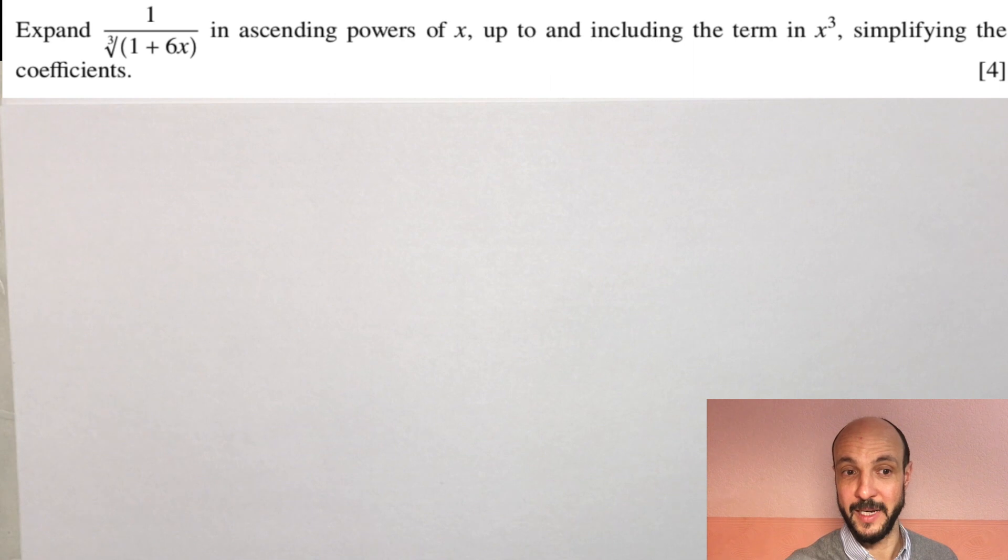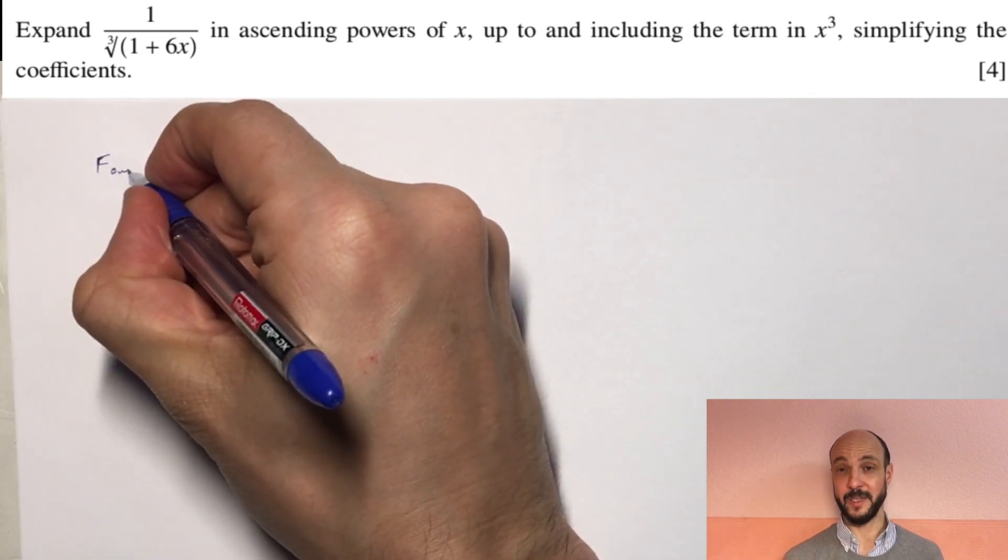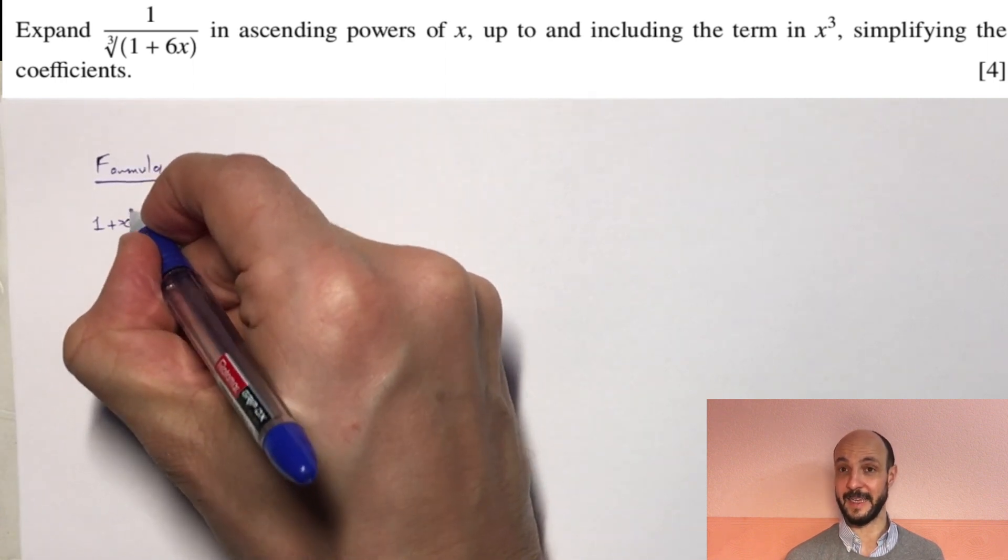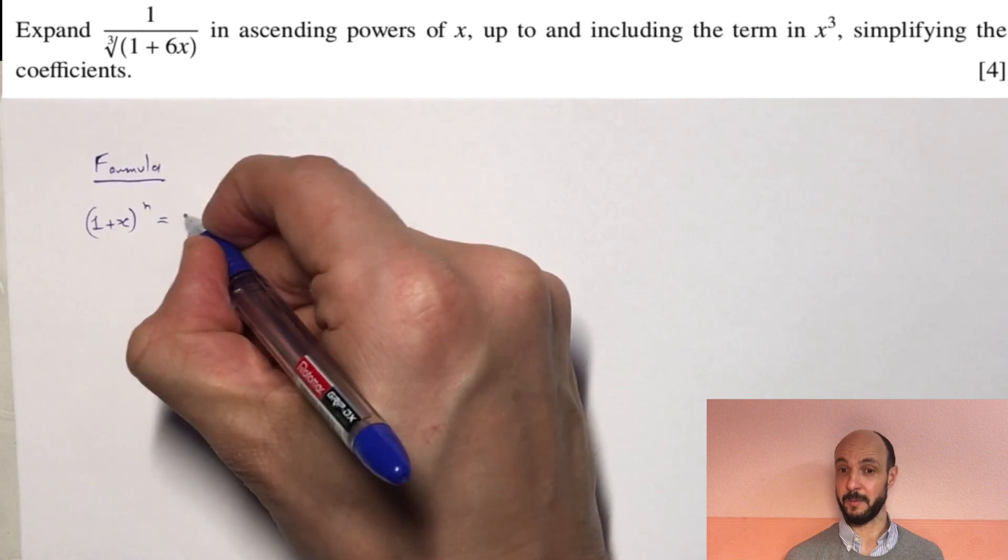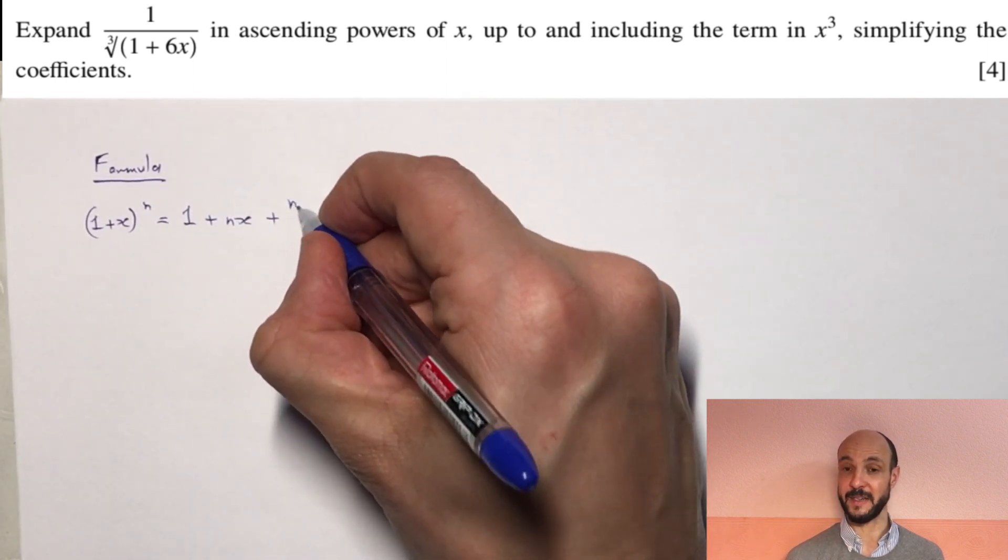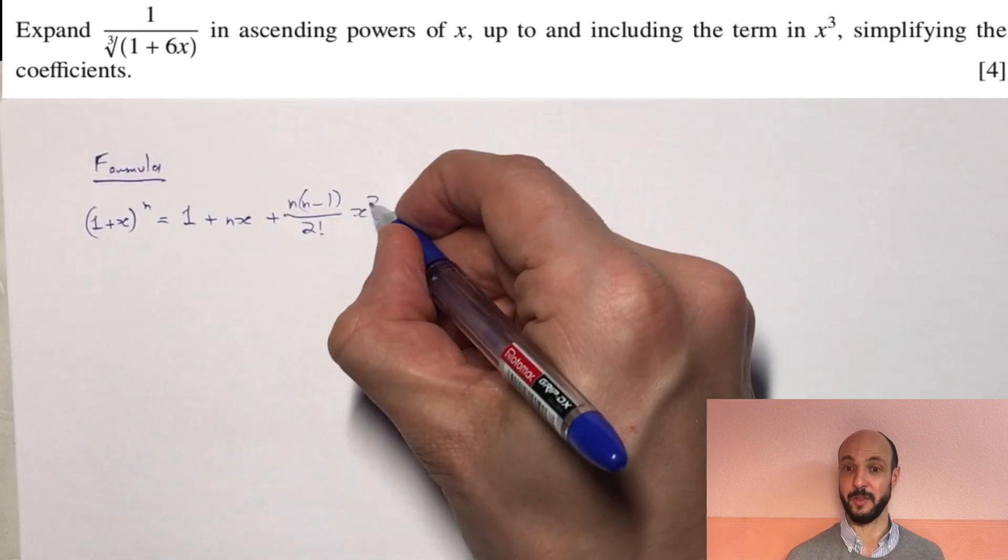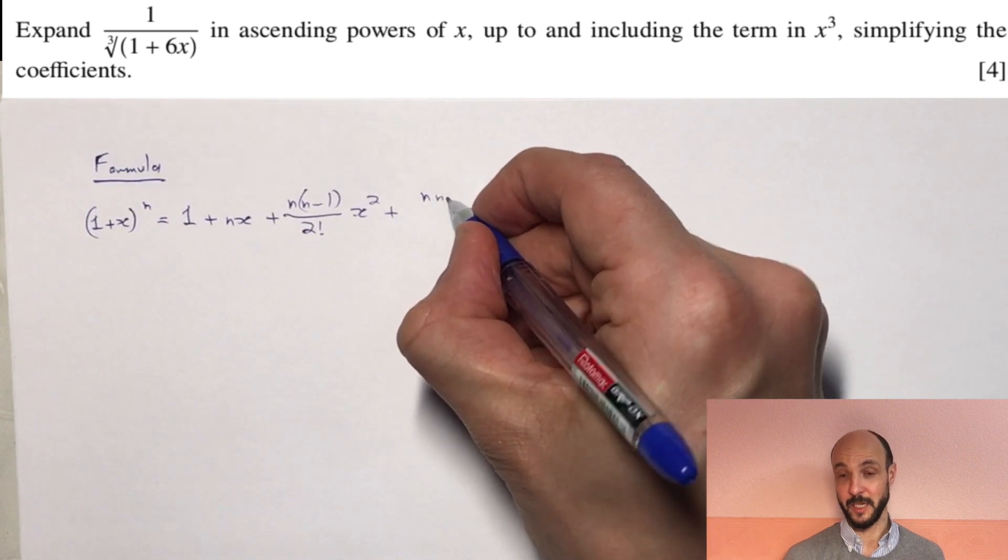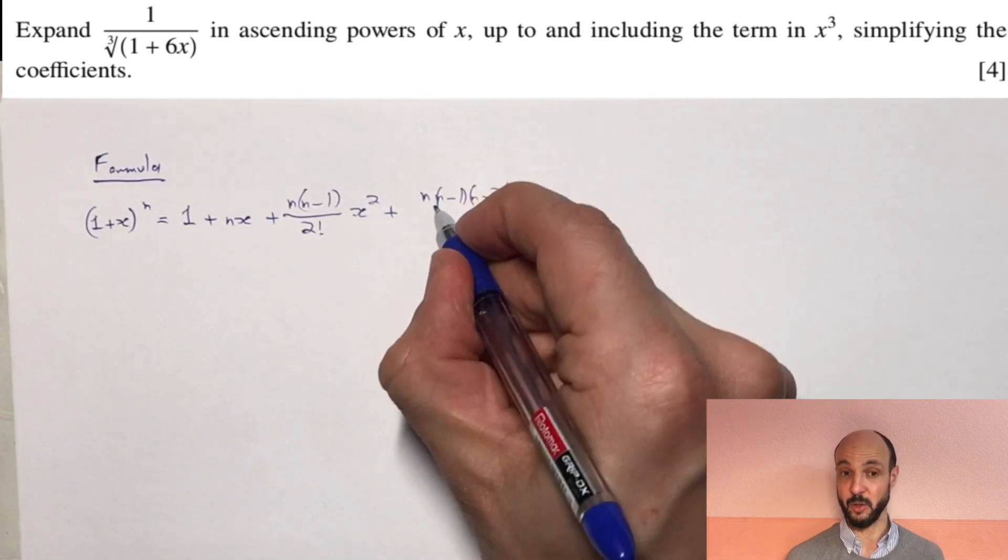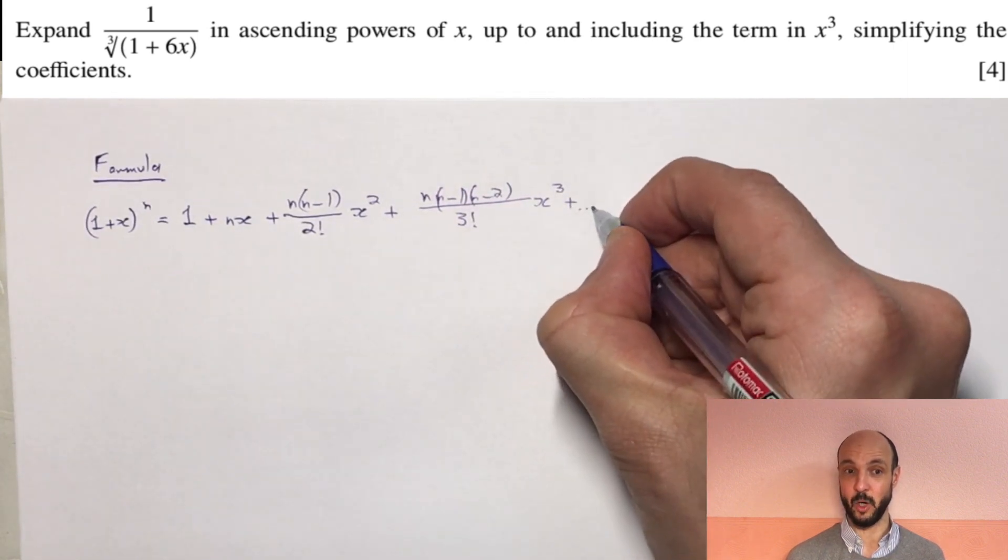So straightforward binomial expansions question here. We're going to use our formula which is given in the Cambridge exams formula book, which is 1 plus x to the n equals 1 plus nx plus n times n minus 1 over 2 factorial x squared plus n times n minus 1 times n minus 2 over 3 factorial x cubed, and then we've got a quartic term, but we only need to go up to cubic in this question. And that's valid for the mod of x is less than 1.